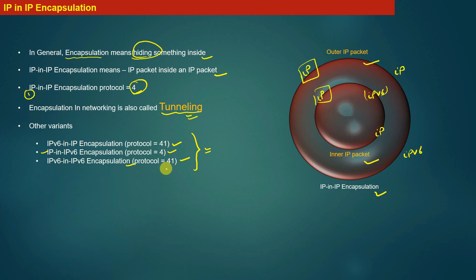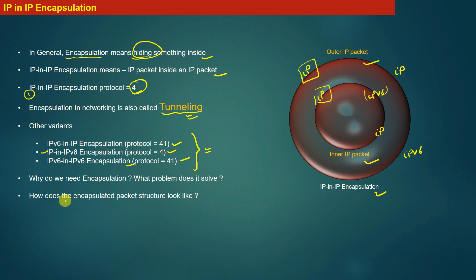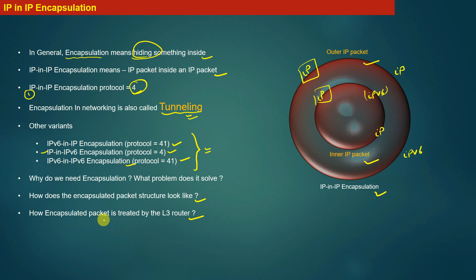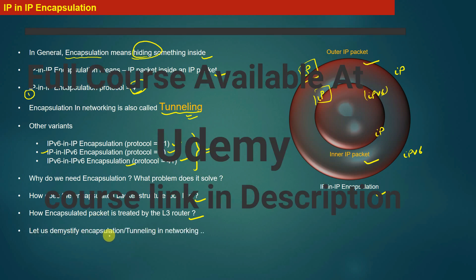In this module we will discuss IP in IPv6 encapsulation in detail. Key questions to address are: Why do we need encapsulation and what problem does it solve? How does the encapsulated packet structure look? And how is an encapsulated packet treated by an L3 router — what is an L3 router supposed to do when it receives an encapsulated packet? Let us demystify encapsulation and tunneling in networking.